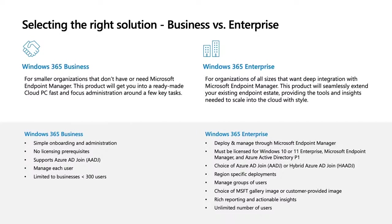The Business edition is generally best for smaller organizations that don't have or need the advanced device and app management capabilities delivered through Microsoft Endpoint Manager. Windows 365 offers the most simple onboarding and administration experience for business owners and IT administrators. There are no licensing prerequisites — you don't need an Intune or Windows license to get started. You can manage each user from the Windows 365 portal at windows365.microsoft.com.